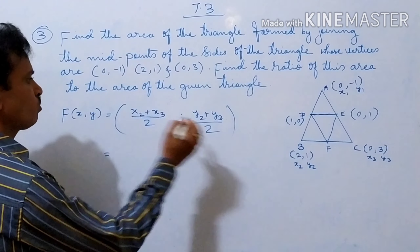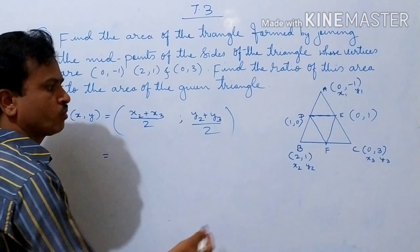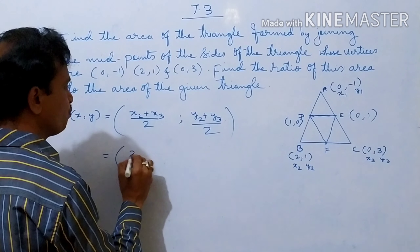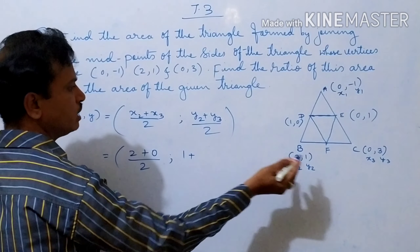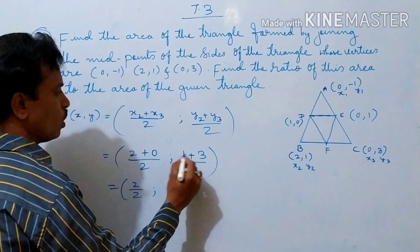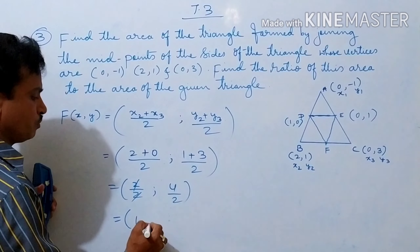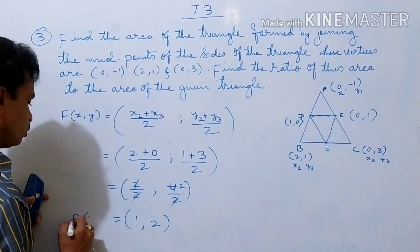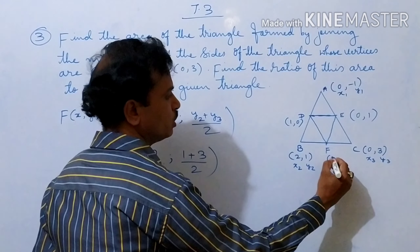Similarly, we find the coordinates of point F, the midpoint of BC. Using the midpoint formula: X = (X2 + X3)/2 = (2 + 0)/2 = 1, and Y = (Y2 + Y3)/2 = (1 + 3)/2 = 2. So the coordinates of point F are (1, 2).